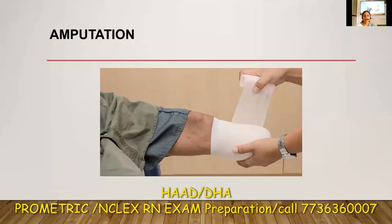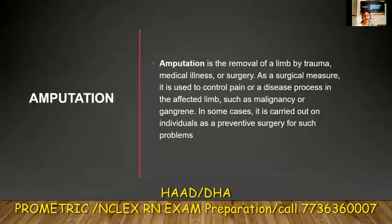Amputation is removal of a limb by trauma or due to a medical illness or surgery. It is a surgical measure. It is used to control pain or a disease process in the affected limb, such as malignancy or gangrene.